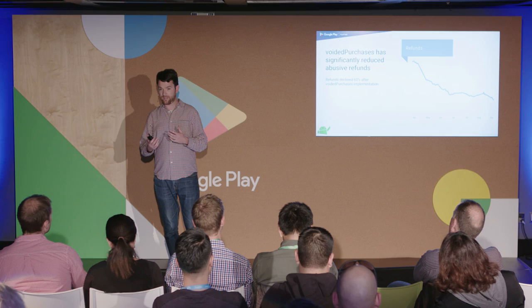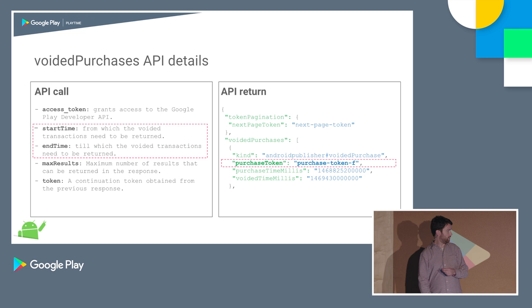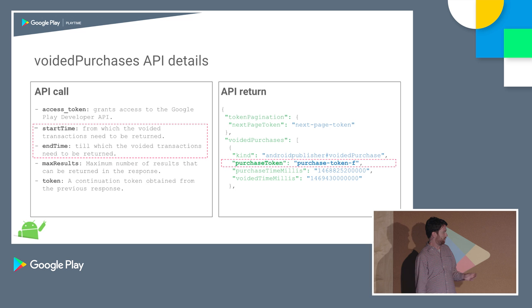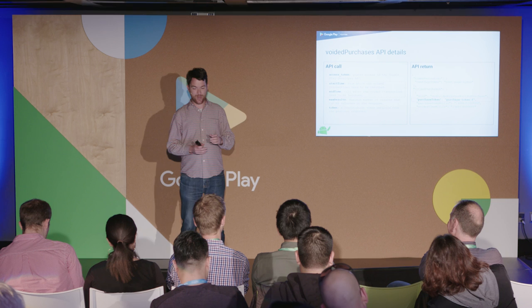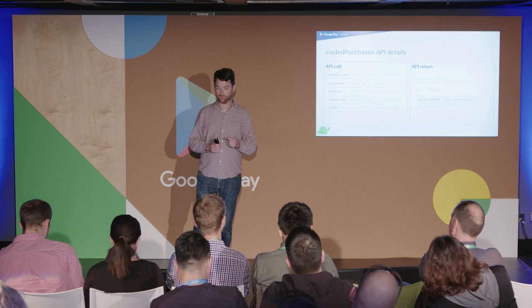Now let's get into a little more detail on how you can implement this for your game. This is an early access API, so you have to sign up — we'll show you a link later on and send you detailed documentation. Broadly, how it works: you give us the start time and end time of a time period for which you want all the voided purchases, call our API, and we give you back a list of orders keyed by purchase token. You can then use that to revoke access to those orders.